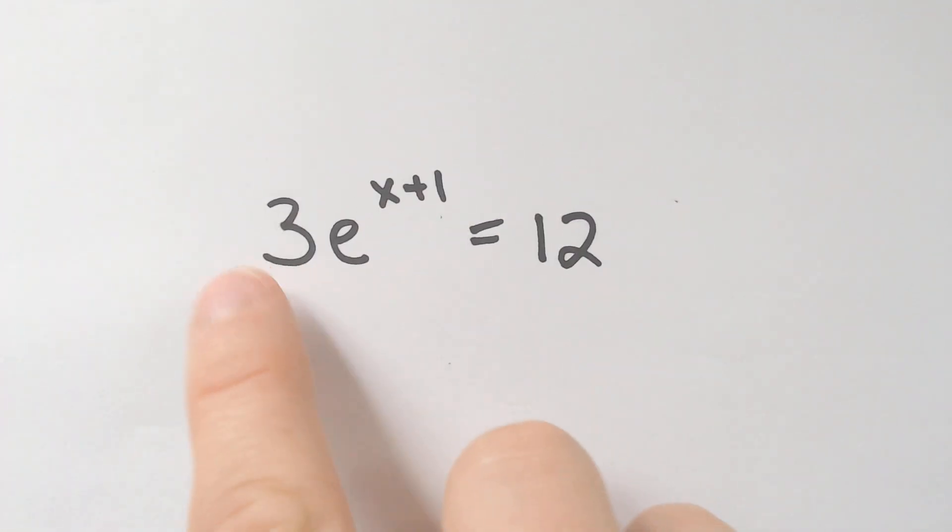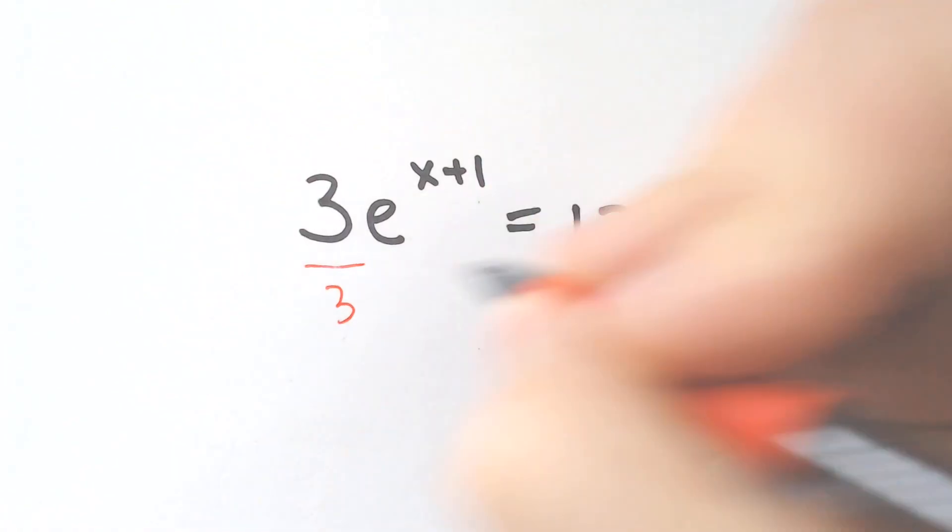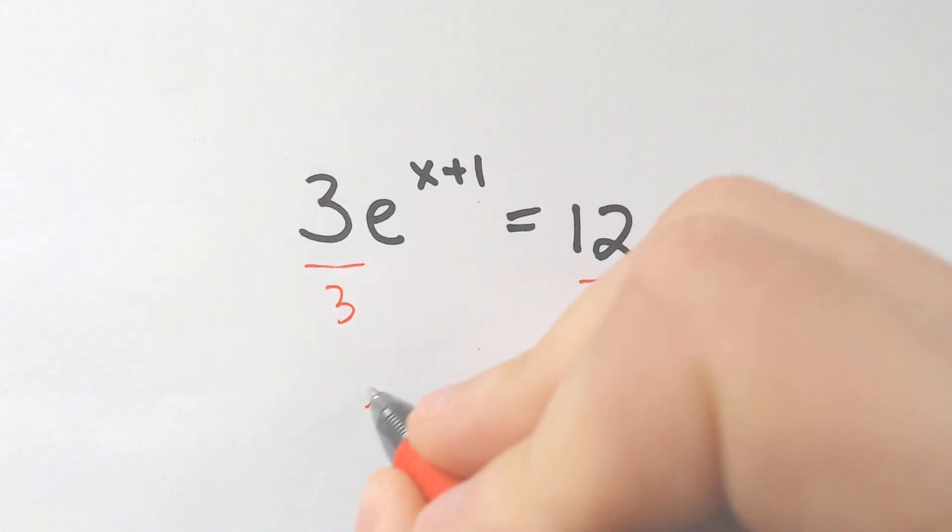Let's do another two, a slightly upgraded version of both. So if you had this problem, where we had 3E to the X plus 1 is equal to 12, you would have to just first divide by 3. Divide by 3. E to the X plus 1 equals 4.